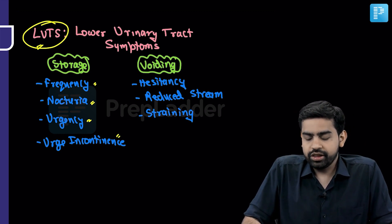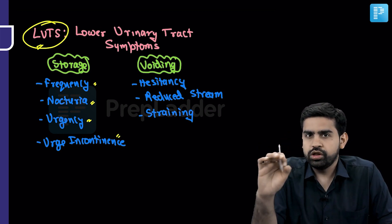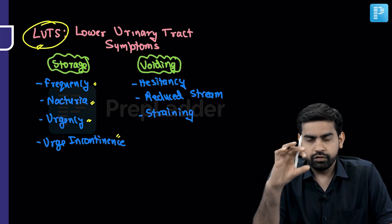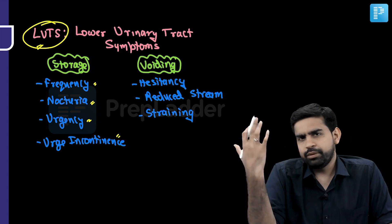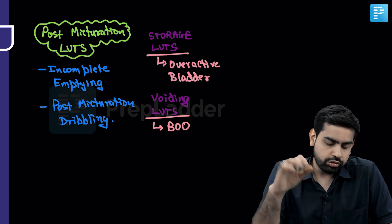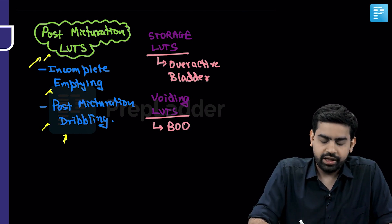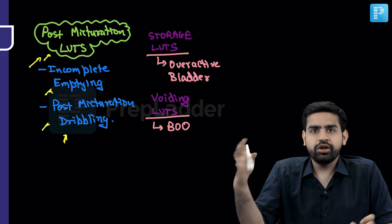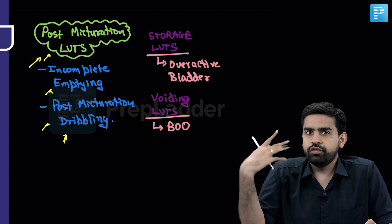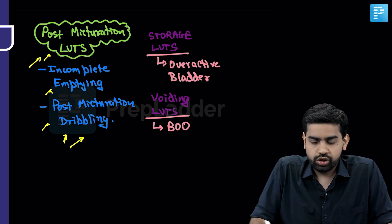Voiding symptoms include hesitancy (taking time for urine flow to start), reduced stream (poor flow), and straining (applying pressure to pass urine). Post-micturition LUTS include incomplete voiding — the patient feels urine is still remaining in the bladder — and post-micturition dribbling. Storage LUTS are associated with overactive bladder, where the detrusor contracts repeatedly, causing frequency, urgency, and urge incontinence. Voiding LUTS such as poor flow and hesitancy are features of bladder outlet obstruction.